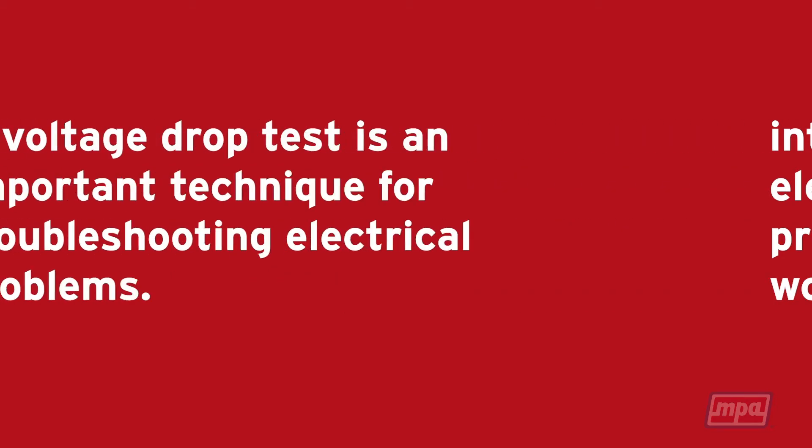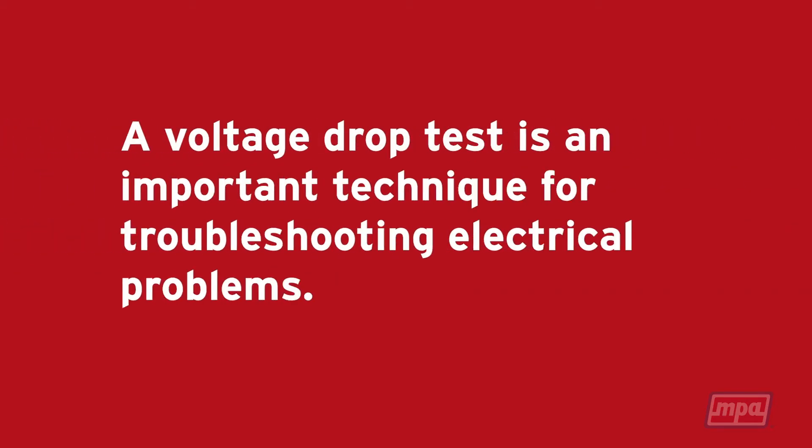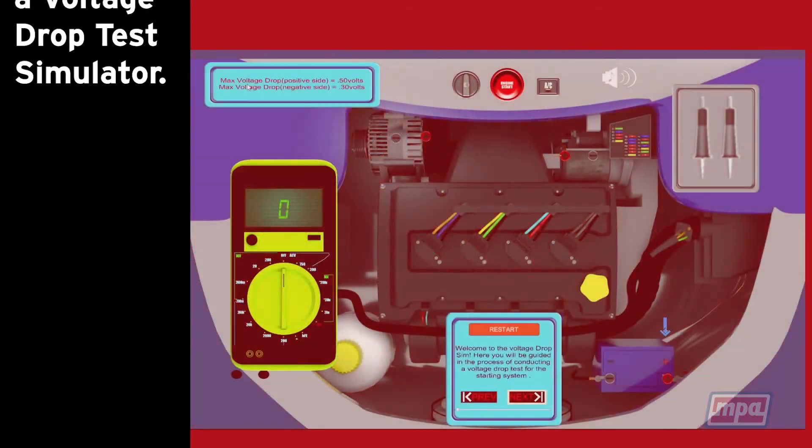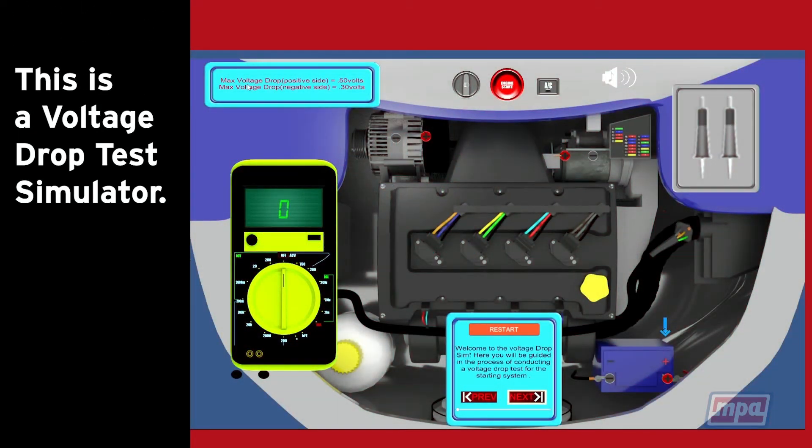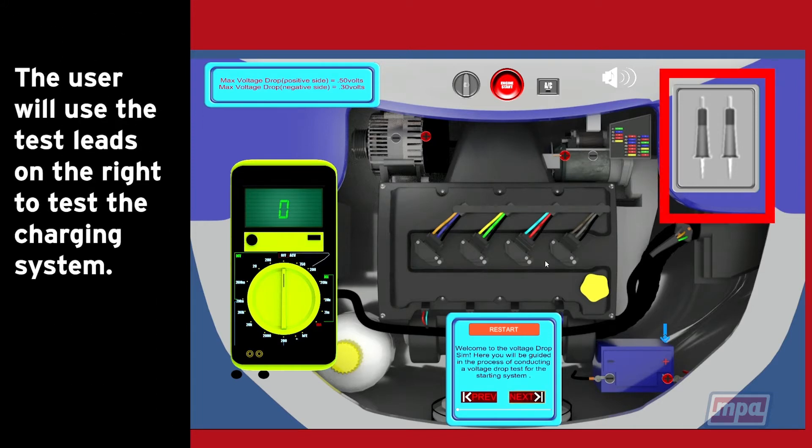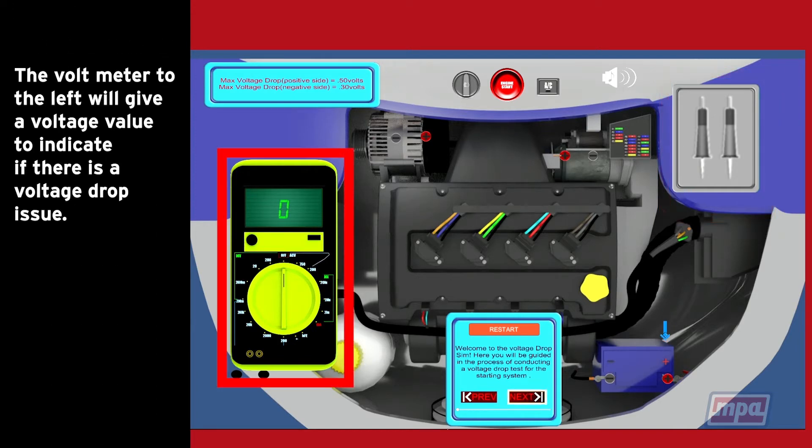A voltage drop test is an important technique for troubleshooting electrical problems. A voltage drop test can determine if a circuit is dropping more voltage than it should. This is a voltage drop test simulator. The goal of this tool is to teach the importance of voltage drop testing. The user will use the test leads on the right to test the charging system. The voltmeter on the left will give a voltage value to indicate if there is a voltage drop issue.